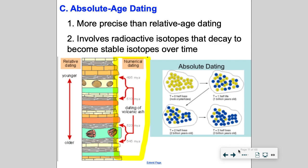With absolute age dating, you can actually pinpoint it and give it a number. With relative, you're just looking at layers — you know the older rocks are at the bottom and the young ones are on top. But with absolute, you associate a number, a numerical date. So it's way more precise than relative age dating.